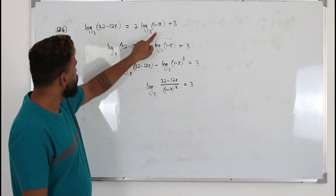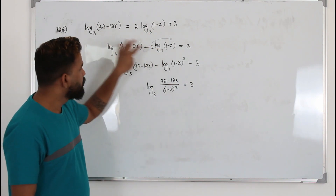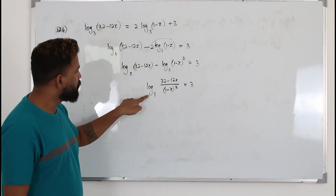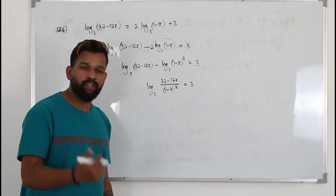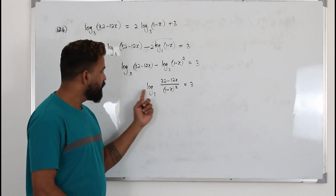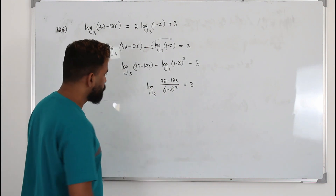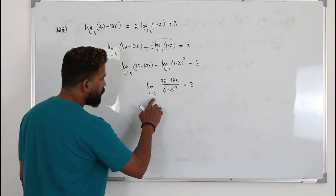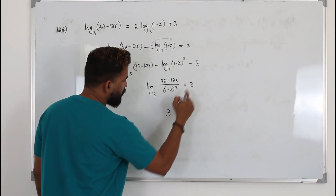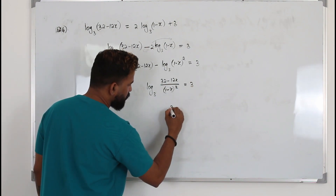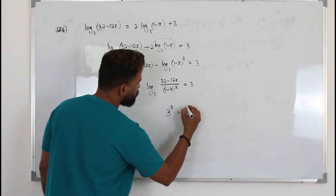Step one: collect all logarithms to one side. Step two: combine into a single logarithm. Step three: rewrite this using powers. Write the base to the power of the number on the other side, equals this expression.